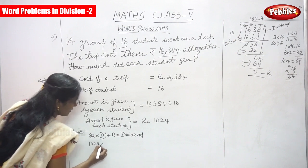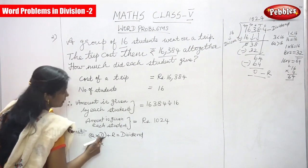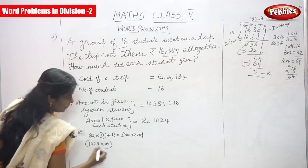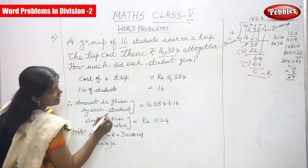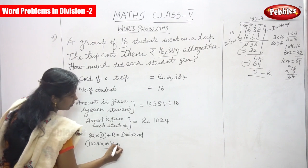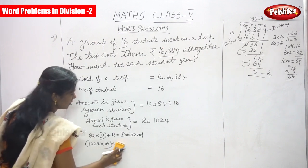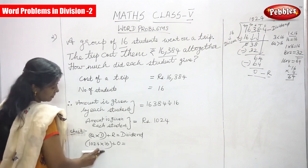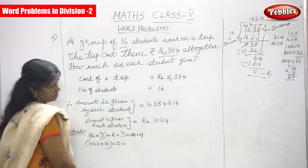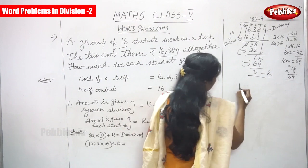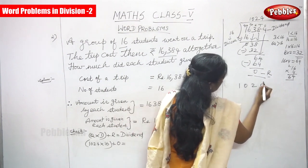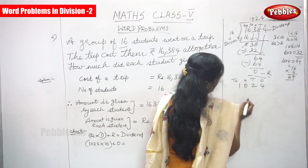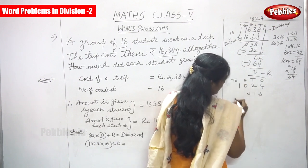1024 is multiplied by the divisor, which is 16, within the bracket, plus remainder 0. Find the answer. So I am going to multiply 1024 by 16. The digits are: 1s, 10s, 100s, 1000s — multiply by 16.